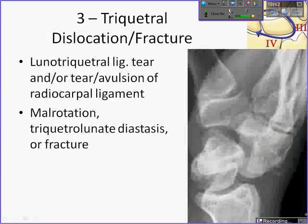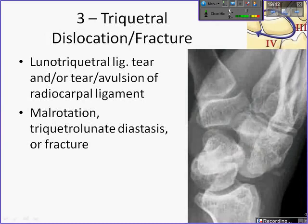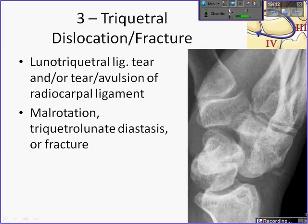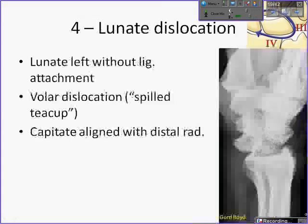The third stage of perilunate instability is triquetral dislocation or fracture. You can have disruption of the lunotriquetral ligament or the volar/dorsal extrinsic ligaments about the triquetrum, with avulsion of bony fragments. The triquetrum may be unstable or malrotated. You may see triquetrolunate diastasis or fracture — though not commonly. In this case, you can see a triquetral fracture dorsal to the carpus.